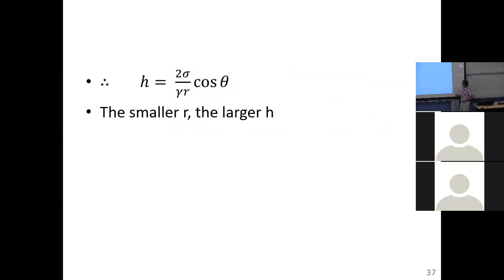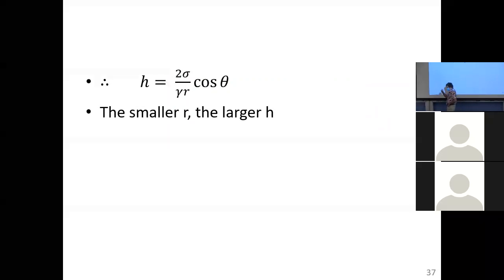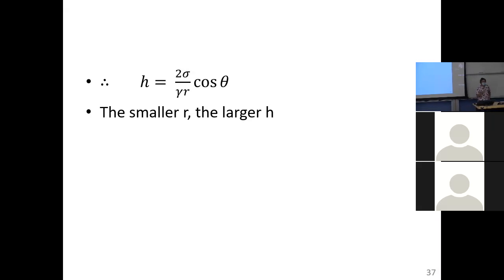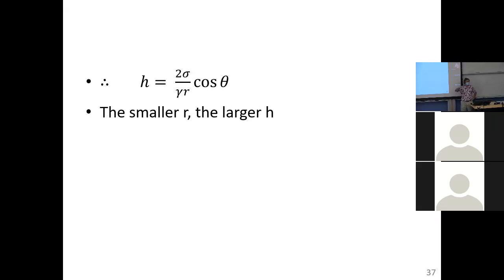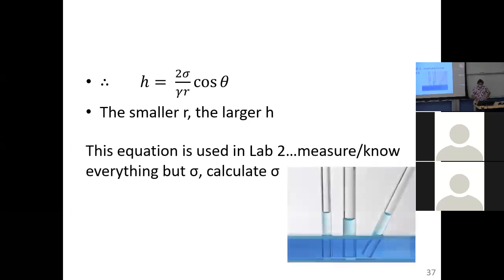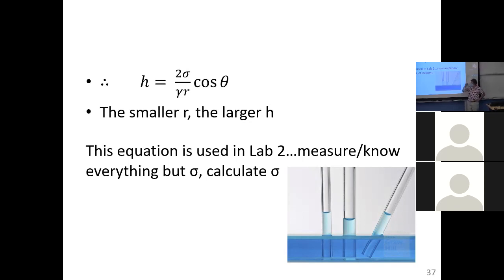Sigma and gamma are fluid properties — they're mildly temperature dependent — but the biggest thing that can change is typically the radius or the diameter of the capillary tube itself. Soils can be looked at as a bundle of capillary tubes, a sponge is a bundle of capillary tubes. What this says is: the smaller the radius of the capillary tube becomes, the higher the capillary rise, and this is only in the vertical dimension.